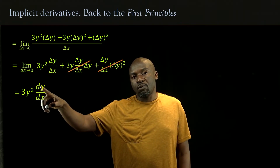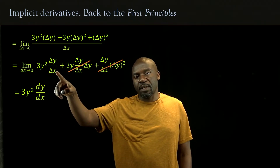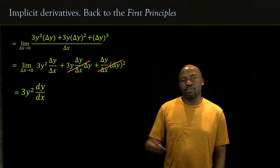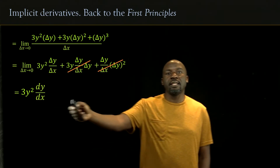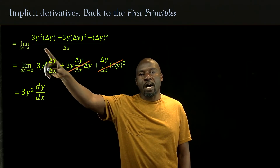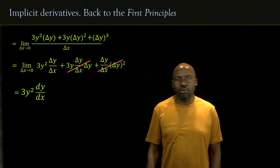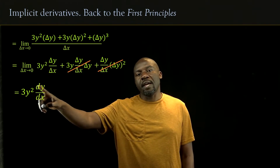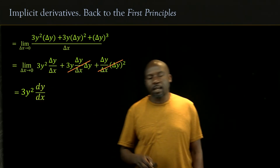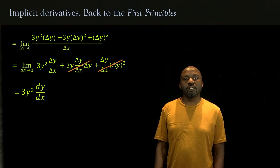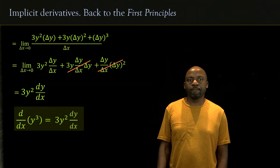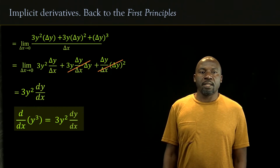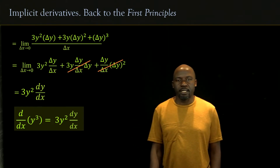Unlike before, we don't have delta x divided by delta x — instead we have delta y over delta x, which cannot cancel because the numerator is a different variable. So there is a residue that remains behind, and the derivative of y cubed with respect to x is 3y squared dy by dx.